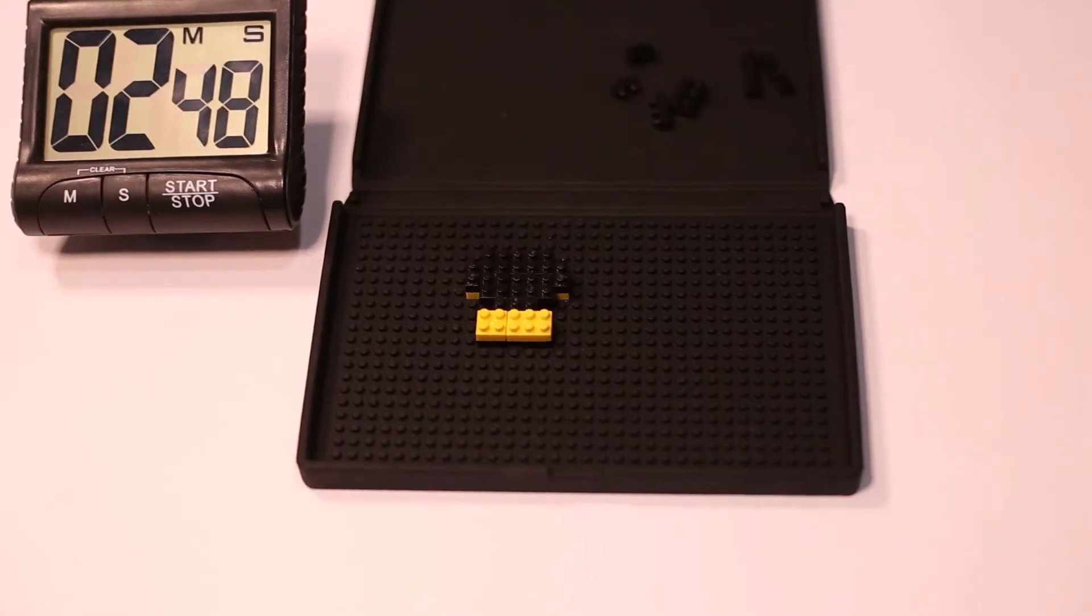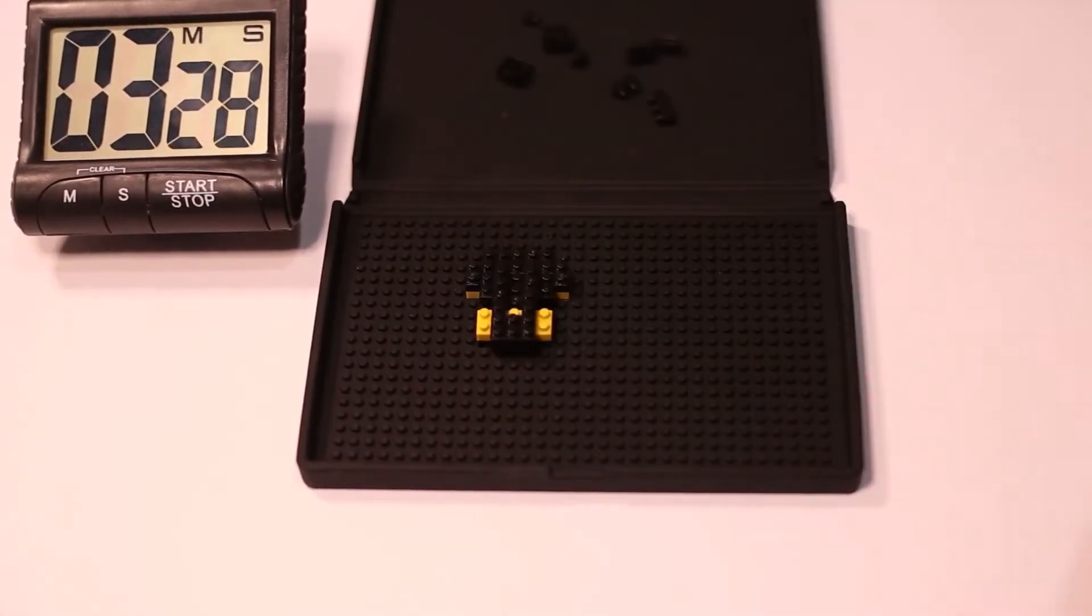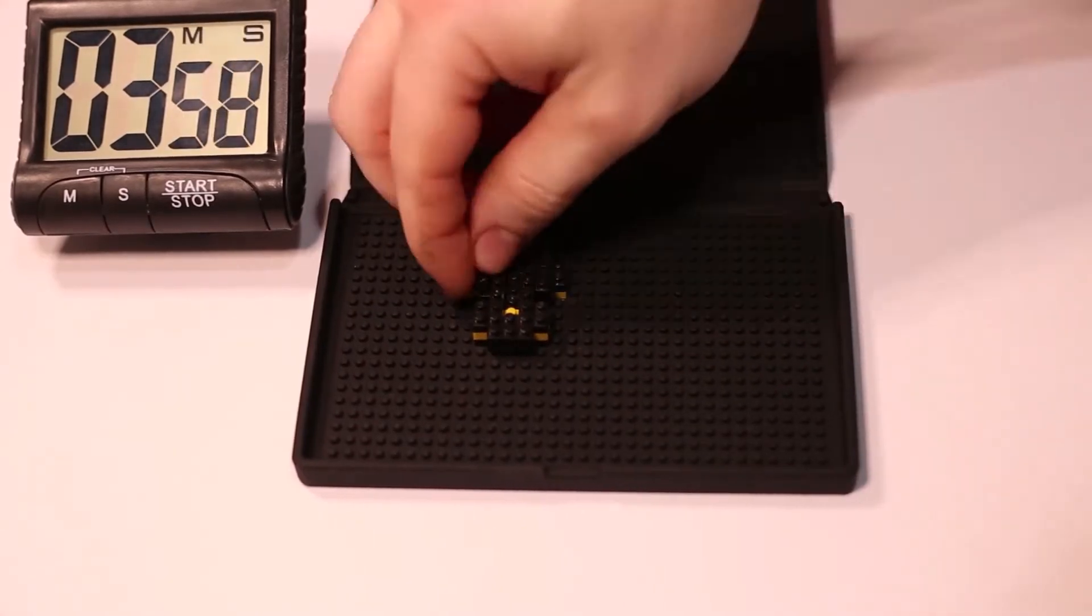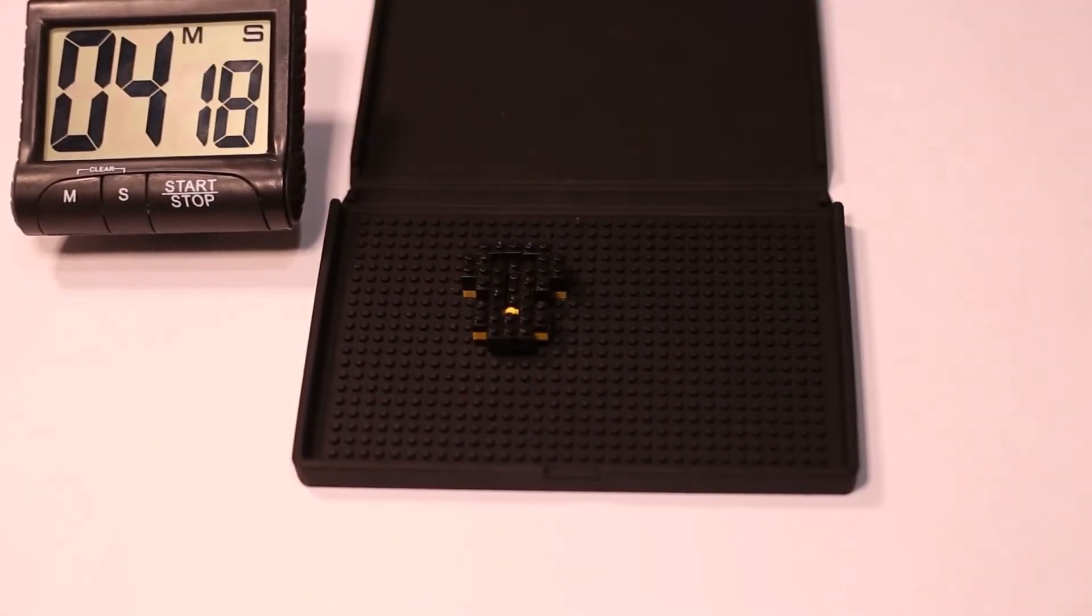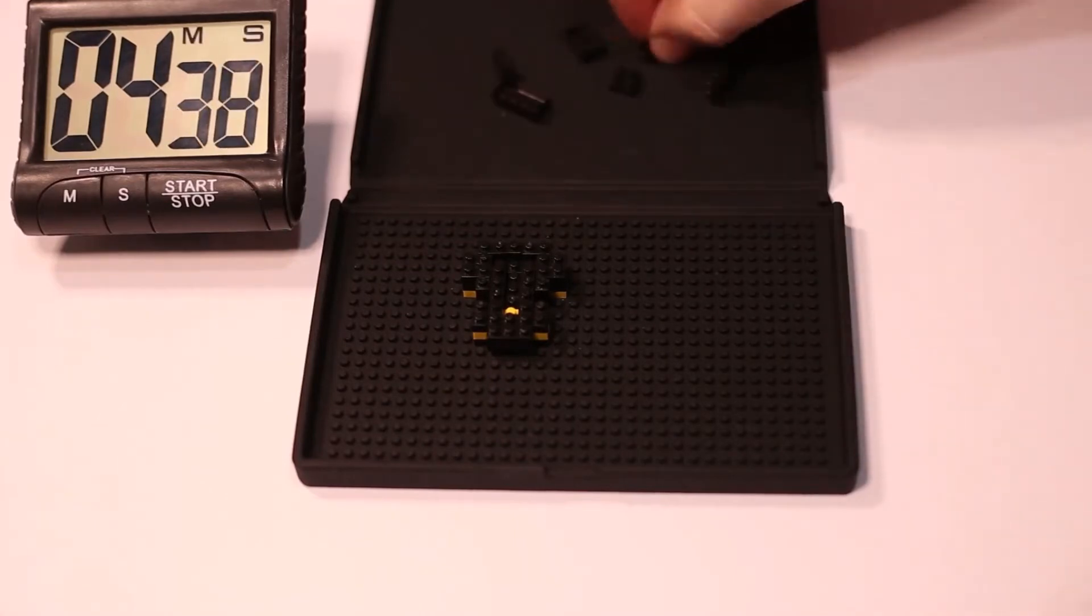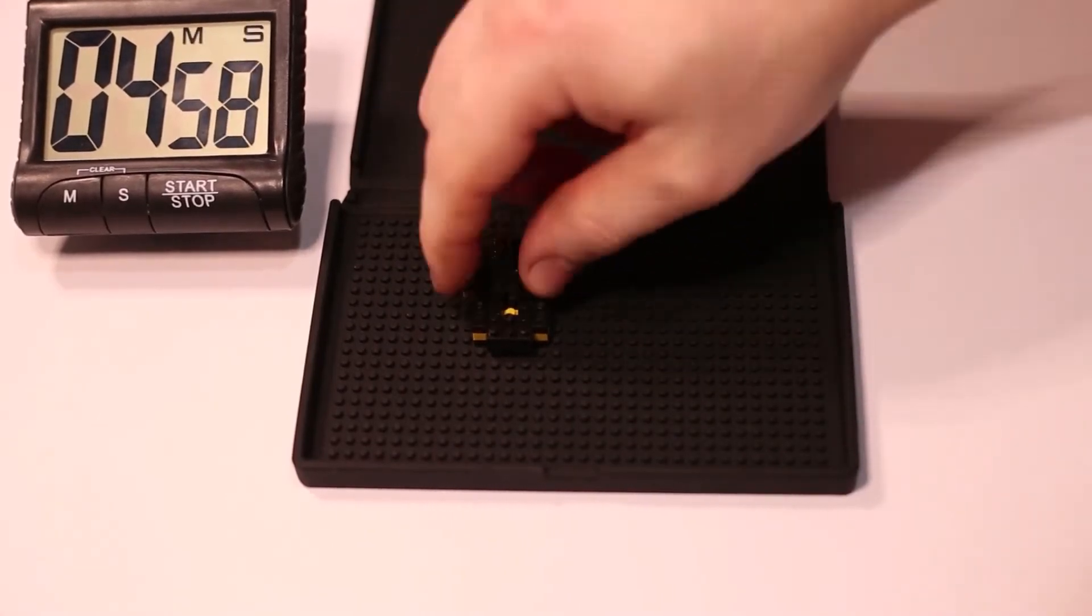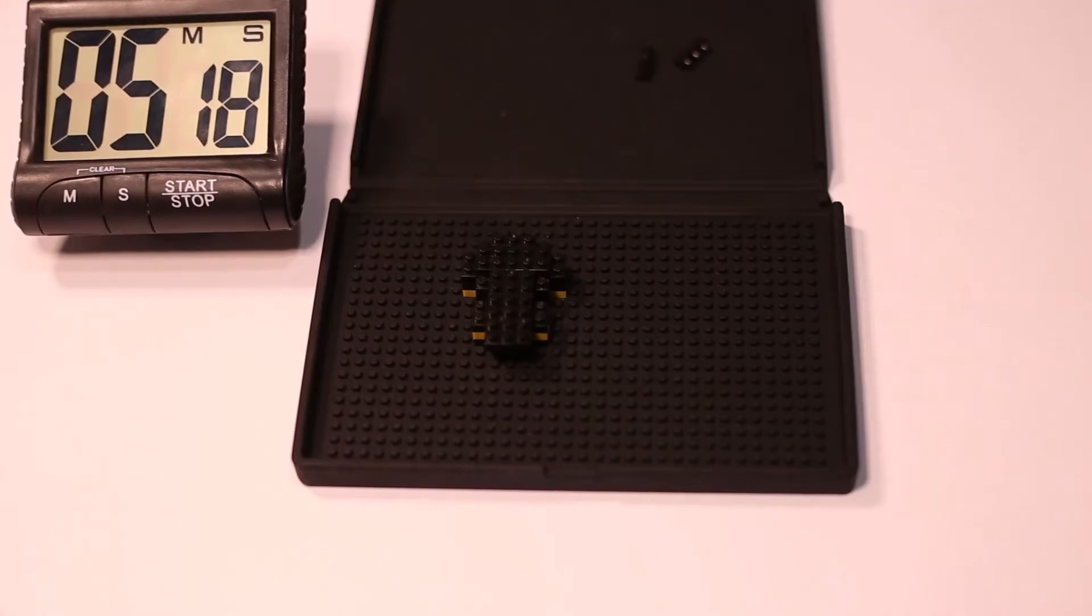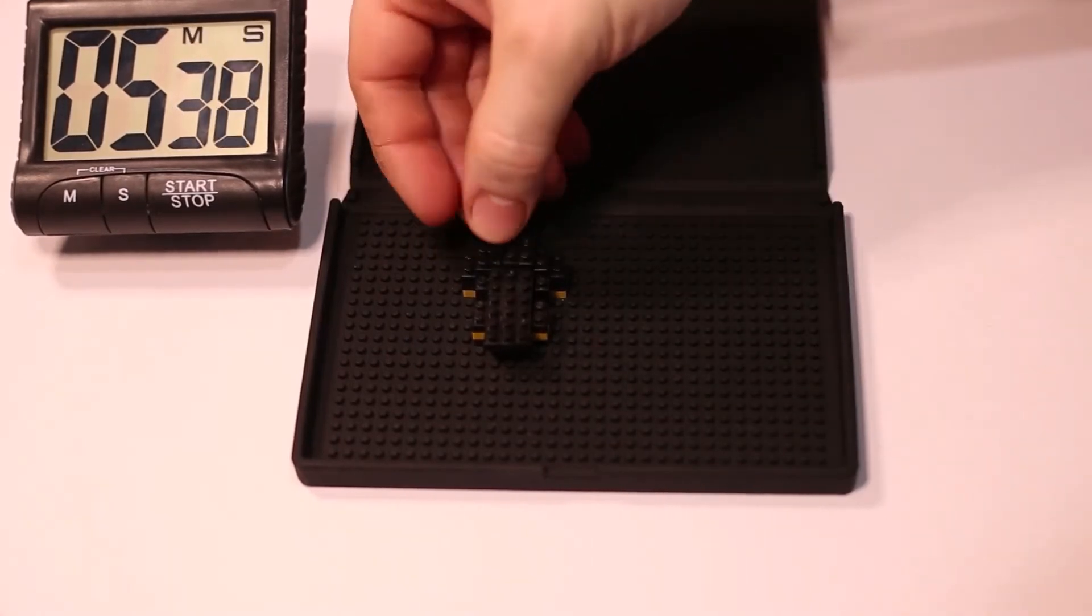Looking at the packaging, it's just your normal NanoBlox plastic packaging with an image of the completed product on the front and the difficulty and number of pieces in the set. On the back of the packet, just your normal stuff, no zero to three-year-old, choking hazard, and where the parts were designed and made.